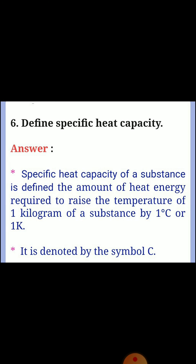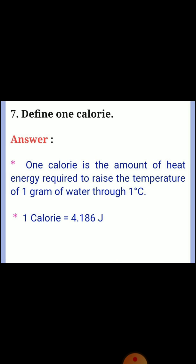Question 6: Define specific heat capacity. Answer: Specific heat capacity of a substance is defined as the amount of heat energy required to raise the temperature of one kilogram of a substance by one degree Celsius or one Kelvin. It is denoted by the symbol C. Question 7: Define one calorie. Answer: One calorie is the amount of heat energy required to raise the temperature of one gram of water through one degree Celsius. One calorie is equal to 4.186 Joules.